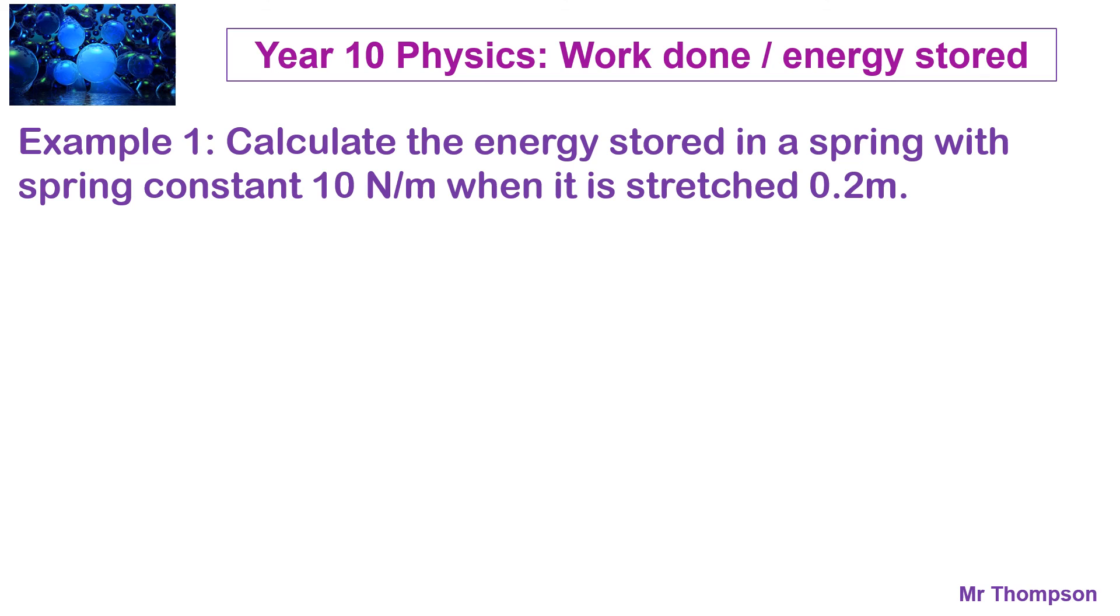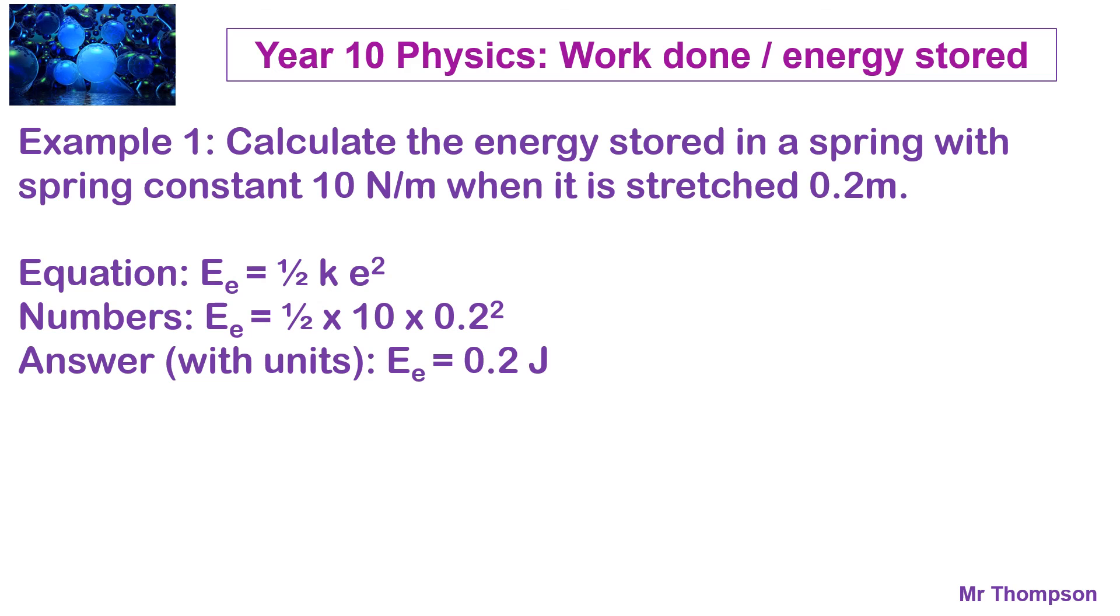So, here's an example. Calculate the energy stored in the spring, when the spring constant is 10 units per meter, when it's stretched by 0.2 meters. So, write down the equation. You've read it from the data sheet. And then, put the numbers in. Remember, you're only squaring the extension. And it should come out as 0.2 squared is 0.04 times 10, 0.4 and half of that is 0.2 joules.